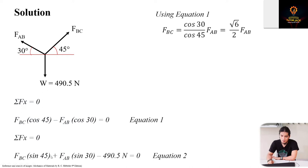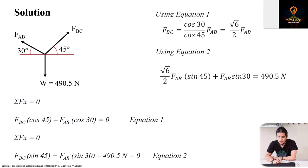Substituting into Equation 2 gives us FBC as square root of 6 over 2. In this equation, there's only one unknown which is FAB. We can solve: square root of 6 over 2 times sine 45 plus sine 30 equals 490.5 - it becomes positive when we move it to the right side. FAB equals 359.07 newtons. Substituting back: 359.07 times square root of 6 over 2 gives us FBC of 439.77 newtons. Now we have the internal forces in wires BC and AB.